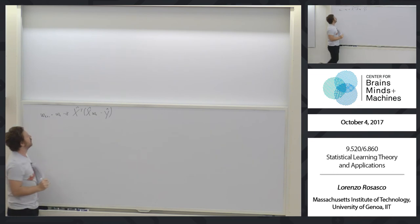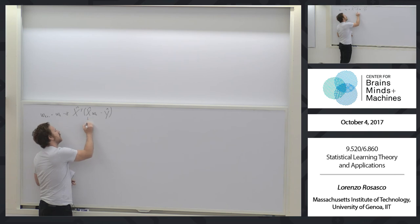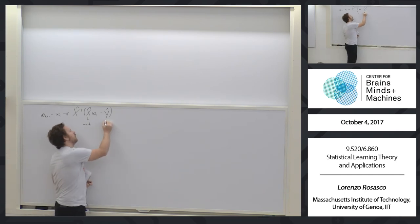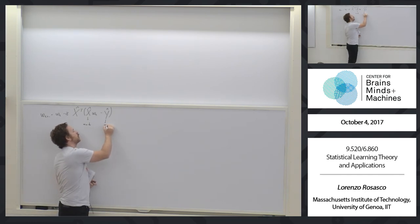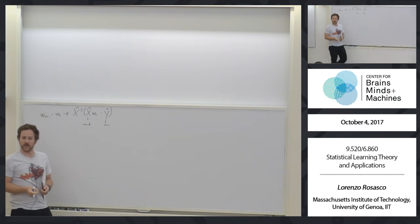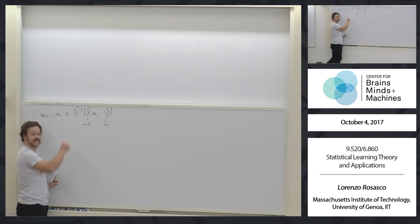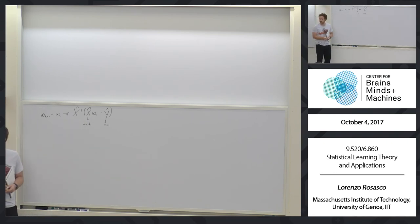The notation here is that the matrix X is just the data matrix — number of points times number of dimensions or features. This is just the output vector where you stack all the outputs in one vector. The basic step we did last time was recognizing this to be the gradient descent on the empirical error defined by least squares.